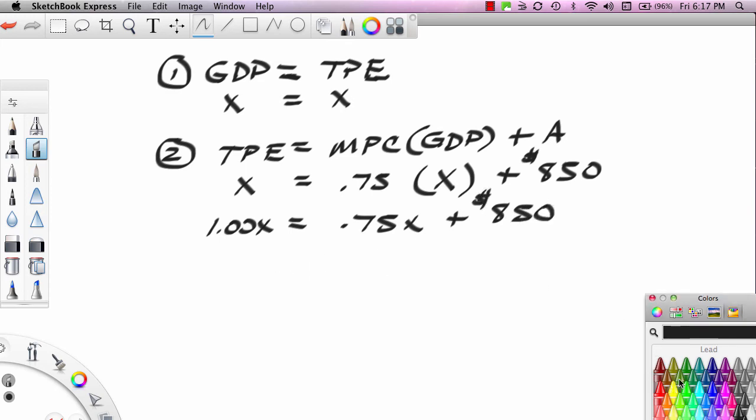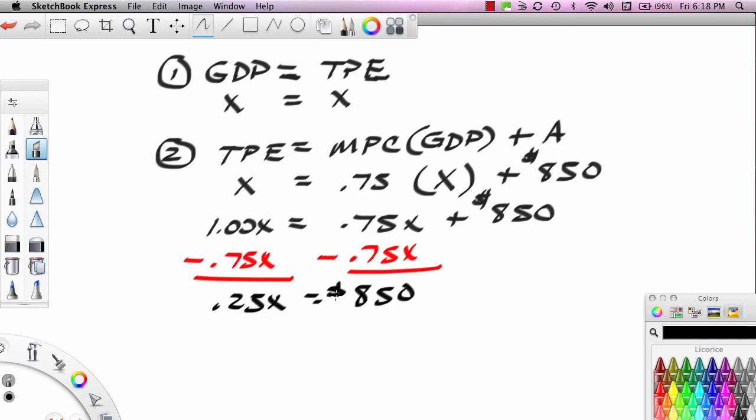This is 1X equals 0.75X plus 850. This is dollars. We can solve group terms and solve this equation by putting the X's on the left side and leaving the constant over on the right side. So we'll subtract 0.75X from this side. We'll subtract 0.75X from this side. And we're going to get 0.25X equals 850. This essentially cancels. And then we can divide this side by 0.25, which means we have to divide this side by 0.25. The 0.25s cancel.